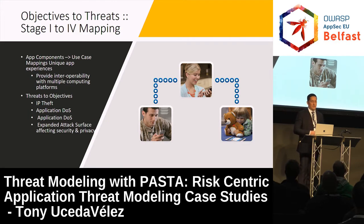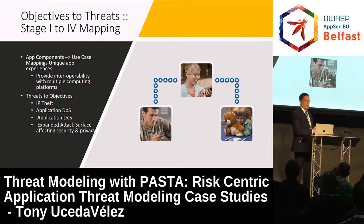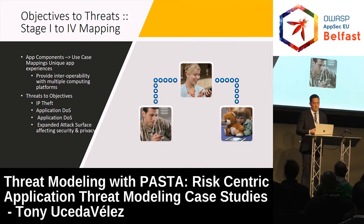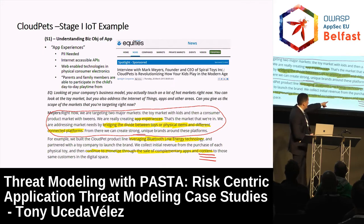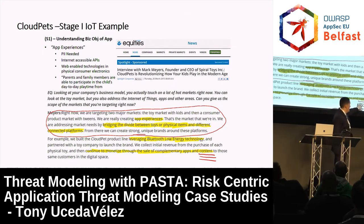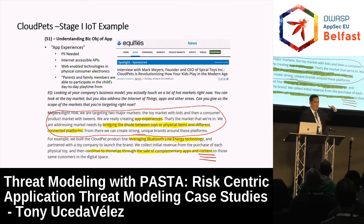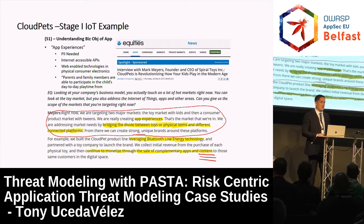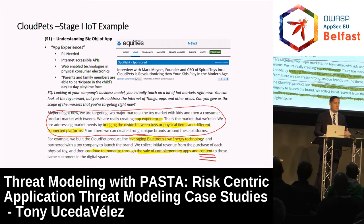Once you've defined what is the importance of the goals of the application in Stage 1 of PASTA, you want to try to map what are some of the inherent threats. In this case, you want to map components to use cases — content management, content distribution — and then think about abuse cases of doing unvalidated content pushes to IoT devices.